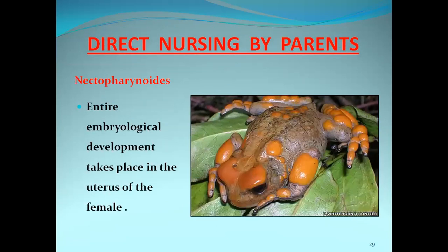The next example is Nectophrynoides. In Nectophrynoides, entire embryological development also takes place inside the uterus of the female, just like Salamandra salamandra. So in both Salamandra salamandra and Nectophrynoides, development of eggs takes place inside the reproductive system of the female.